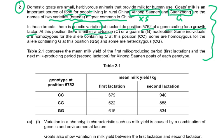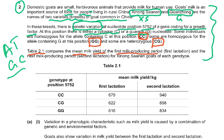Table 2.1 compares the mean milk yield during the first lactation and second lactation for the XS breed of each genotype. CC had 679 kg in first lactation, rising to 940 kg. CG had 622 kg rising to 858 kg. GG had 616 kg, also increasing. All genotypes show increased yield in the second lactation — that is a common factor. Some increased more, some less.